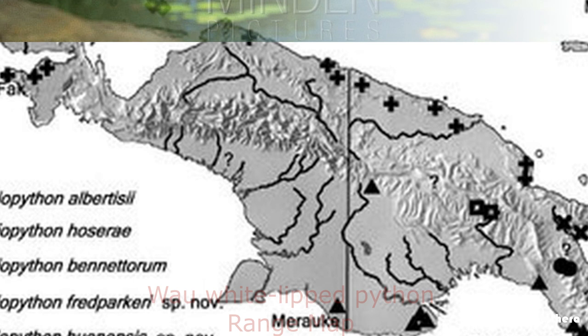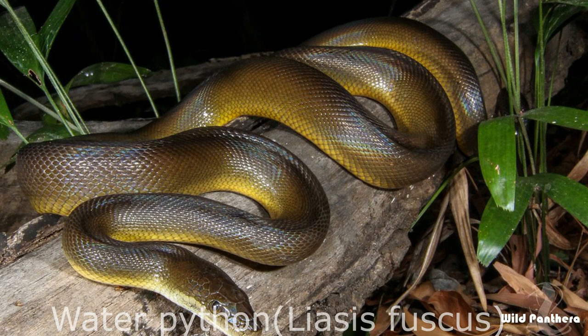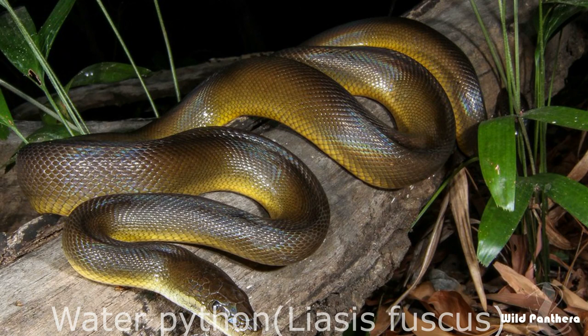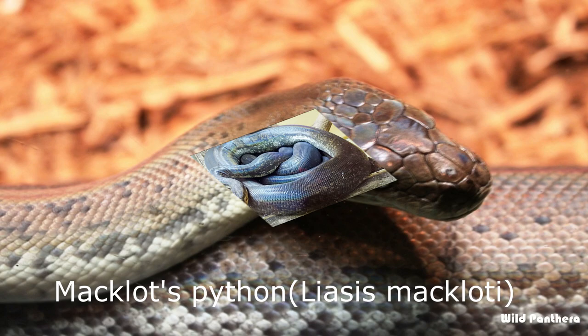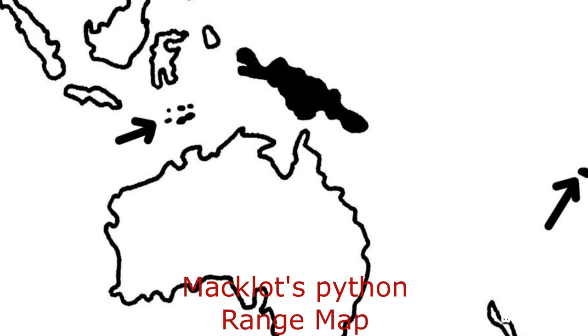Water Python: The Water Python is a non-venomous python species found in Australia and Papua New Guinea. No subspecies are currently recognized. Macklot's Python: Liasis mackloti is a species of python, a non-venomous snake in the family Pythonidae. The species is endemic to Indonesia, East Timor, Papua New Guinea, and coastal northern Australia.